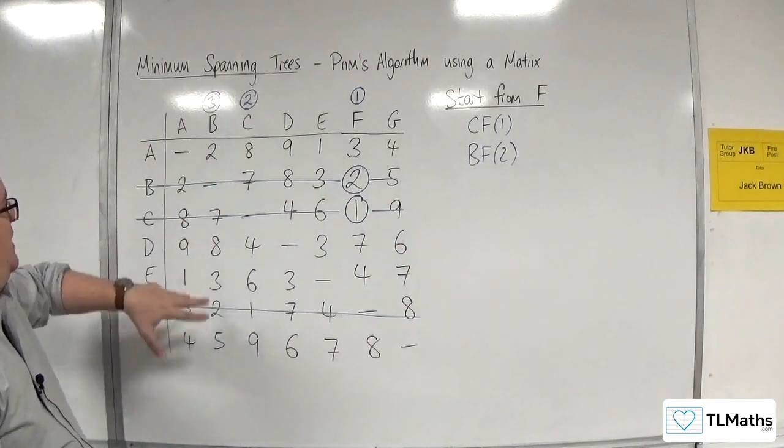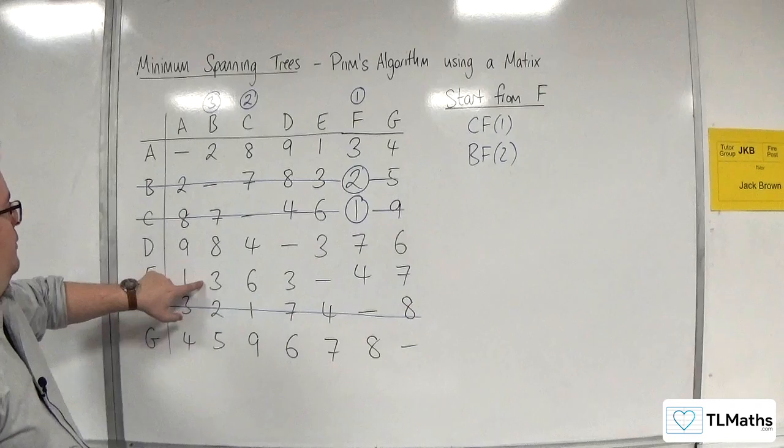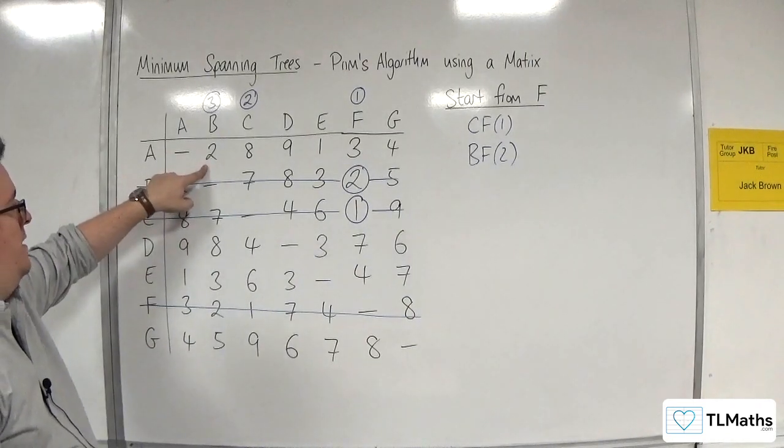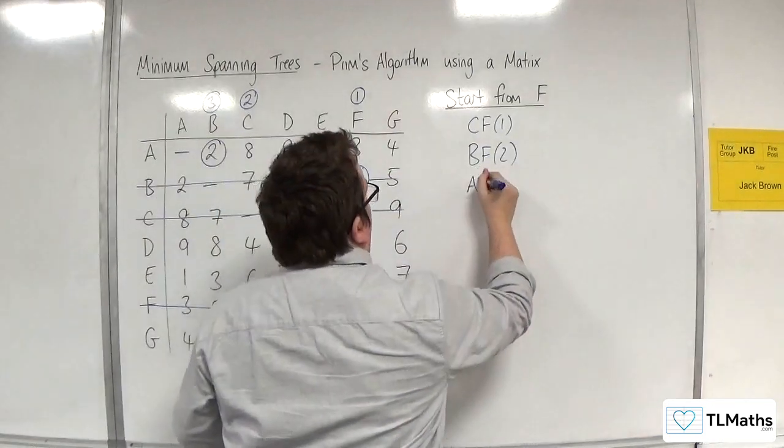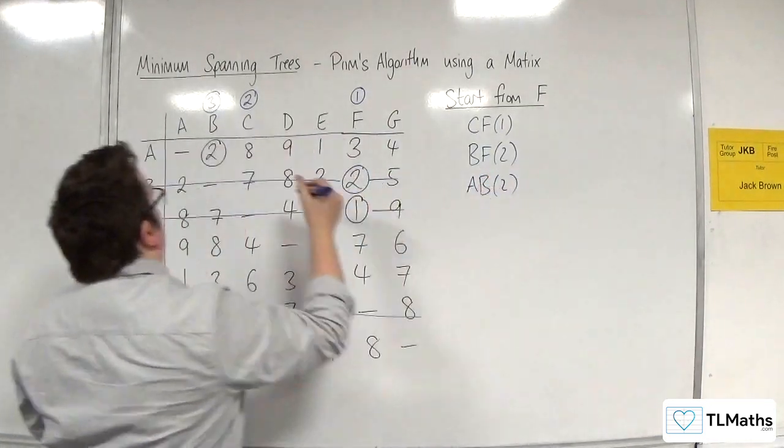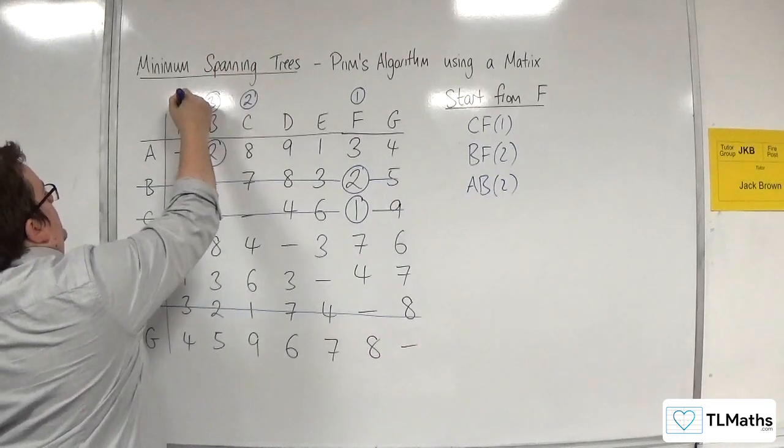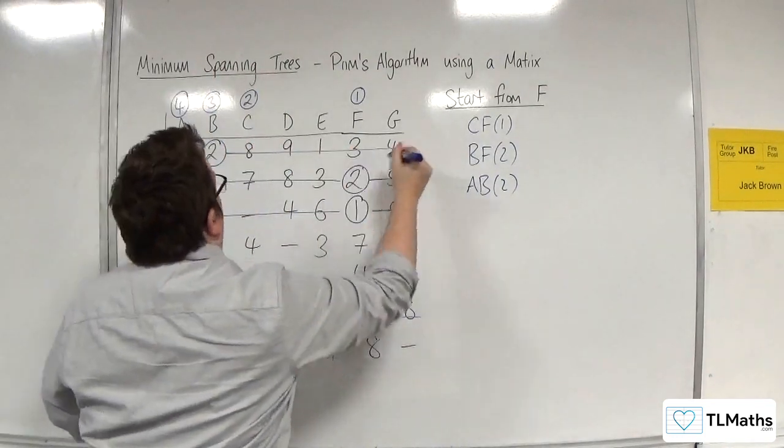We're looking down F, C, and B. I've got a 3, I've got a 2 there. That's the next best, I think. A, B with 2. A is now connected. Number 4, delete the rest of the row.